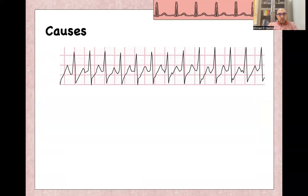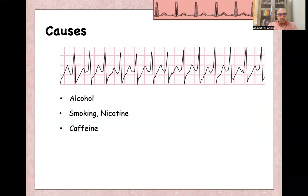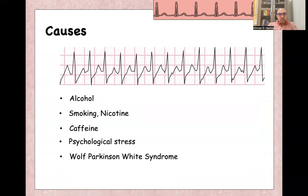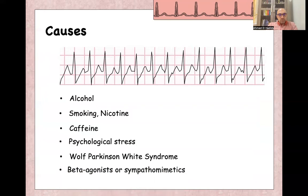There are a lot of causes for SVT, like alcohol, smoking or nicotine, excessive caffeine, psychological stress, and of course accessory pathways like Wolff-Parkinson-White syndrome, excess beta agonists, or sympathomimetics.